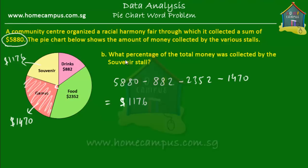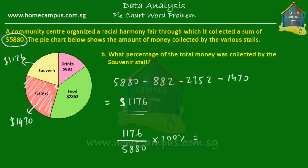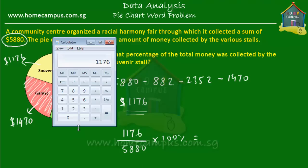We don't just need to find how much the souvenir stall collected — we need the percentage of the total. That subtraction was just the first step. To find the percentage: amount collected over total collection times 100. So $1,176 divided by $5,880 times 100 equals 20%. The souvenir stall collected 20% of the total money.